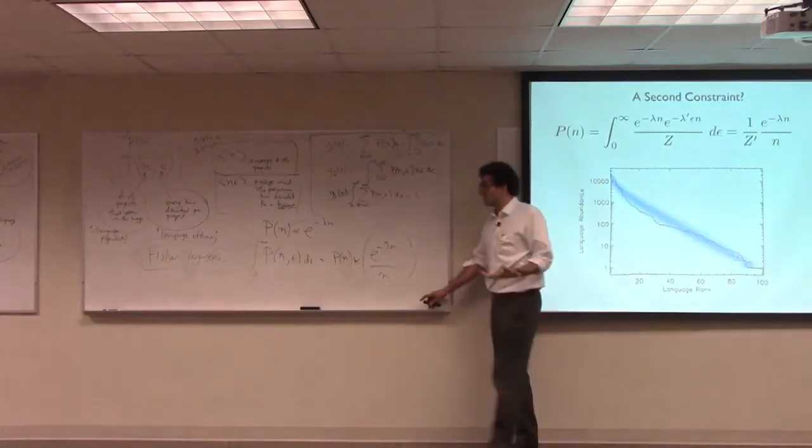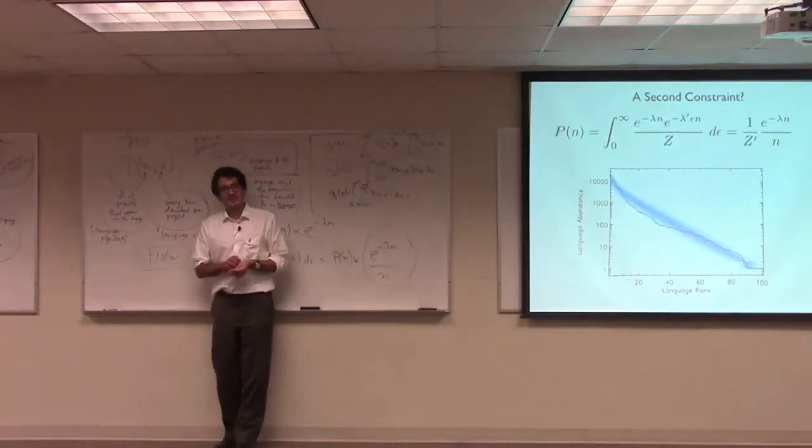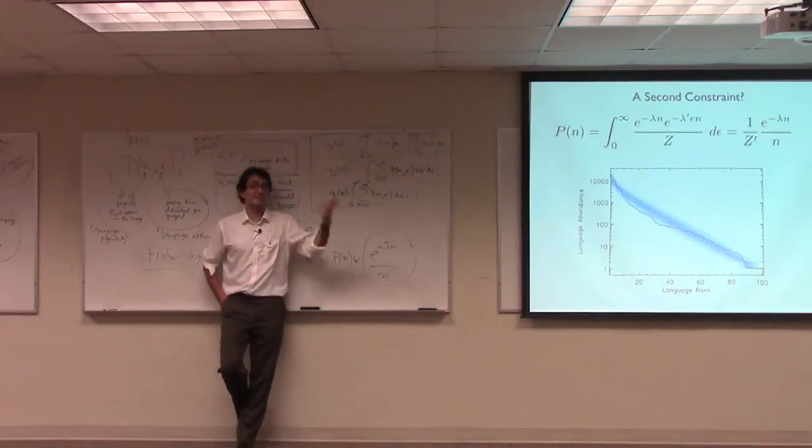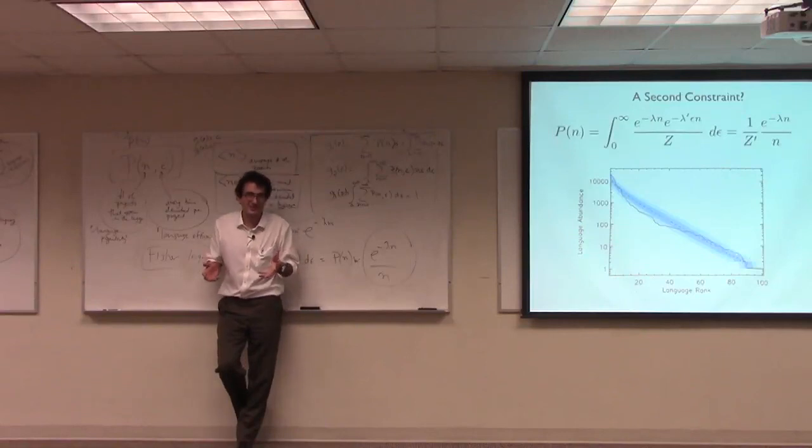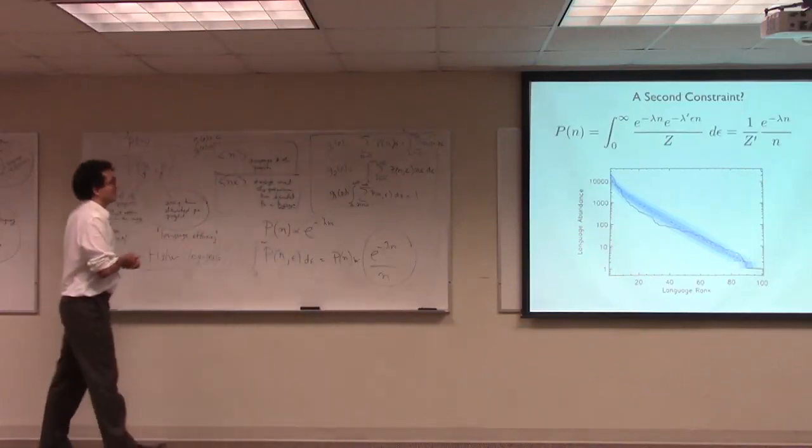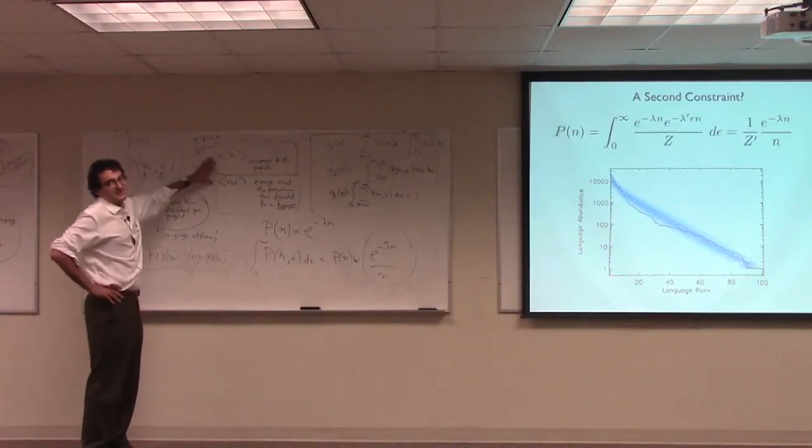So you should be impressed by this in part because it's deeper than the result we got for the taxicab case. In the taxicab case we picked a particular constraint, and it just so happened to correspond to a really simple mechanistic model. And you might say, well I could have come up with that mechanistic model all on my own, thank you very much. Here what we've done is postulate a set of constraints that are scientifically substantive.